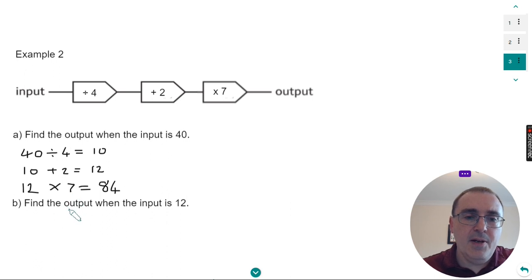Part B then. Find the output when the input is 12. Let's copy down 12. Our first operation is to divide by four. So 12 divided by four is three.